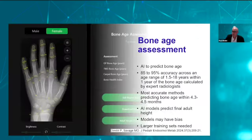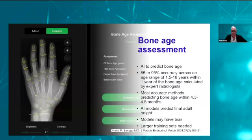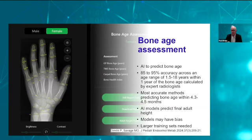AI is now being used to predict bone age and is built into platforms such as BoneXpert, achieving accuracy of 85–95% in predicting bone age within the range of 1.5 to 18 years. The most accurate methods predict bone age to within 4.3 to 4.5 months. A challenge is that the training data sets are based on predictions given by radiologists, which carries a risk of bias based on the radiologist's opinion and the data used in training.